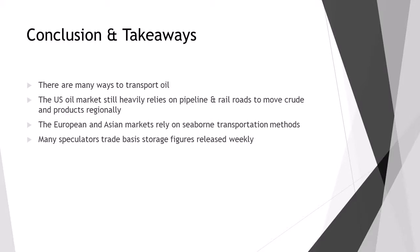To conclude, there are many ways to transport oil. Primarily this is done by transporting cargoes around the world, but in the case of the US market it still relies heavily on pipeline infrastructure and ultimately railroads, given there is so much demand in so many places. European and Asian markets, however, are more reliant on seaborne transportation. Finally, speculators trade the outright storage figures themselves, given that storage is very important to understanding the supply and demand situation and therefore impacts the oil derivative market. That concludes the lecture on Transportation of Oil — thank you for listening.